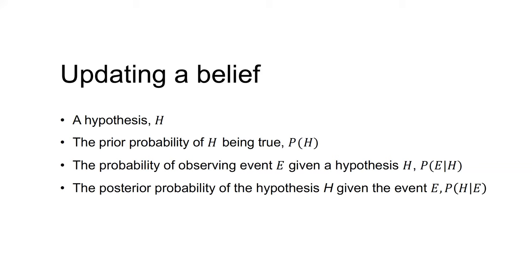A hypothesis H — for example, the coin is fair or the coin is rigged. Second, the prior probability of the hypothesis H being true, P(H) — for example, the coin is fair has a prior probability of 0.5.